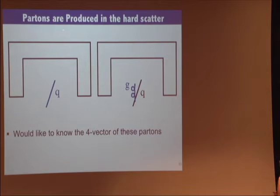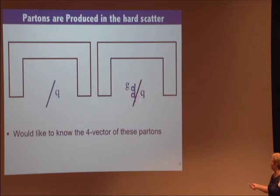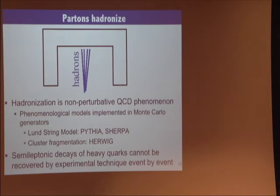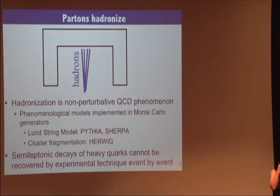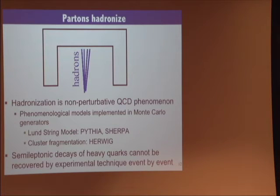Let me tell you about jets. What we really want is the four-vector of the partons produced in the hard scatter. There's already one complication — the quark might radiate a gluon. But then it gets worse: the partons hadronize, which is intrinsically a non-perturbative phenomenon and not well understood. We have phenomenological models implemented in Monte Carlo generators — in particular the Lund string model and the cluster fragmentation model — and we often compare Pythia and Herwig to assess the uncertainty due to hadronization.